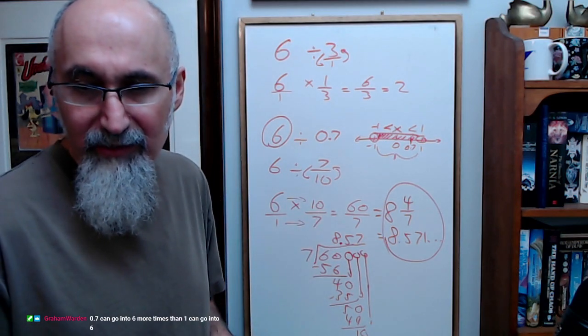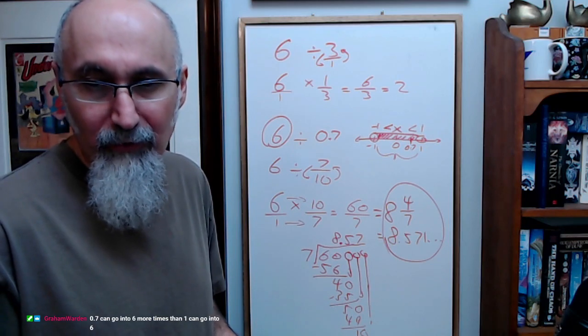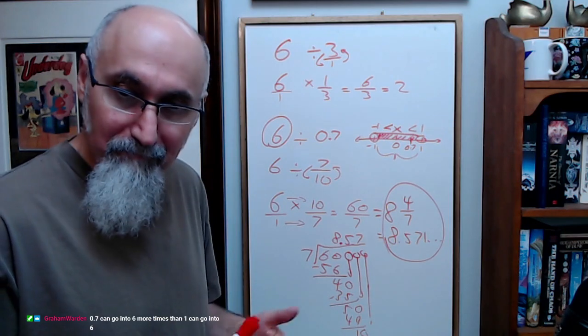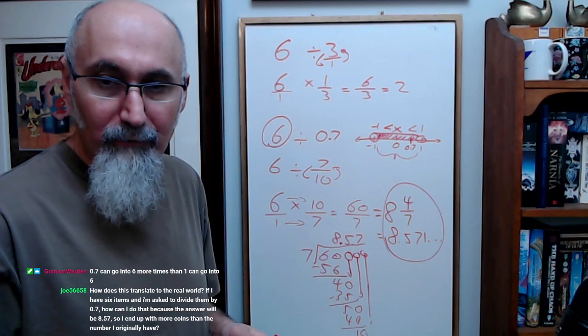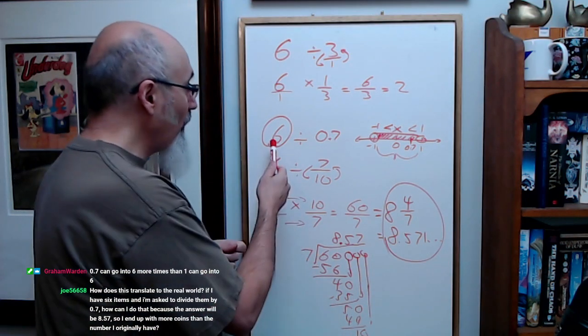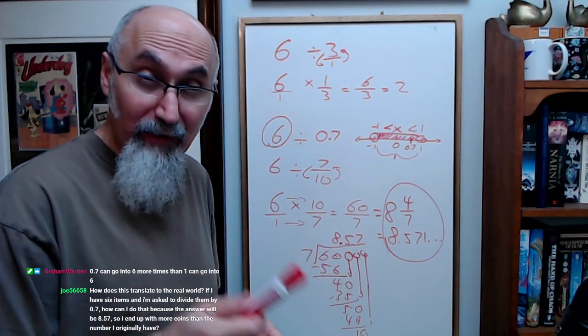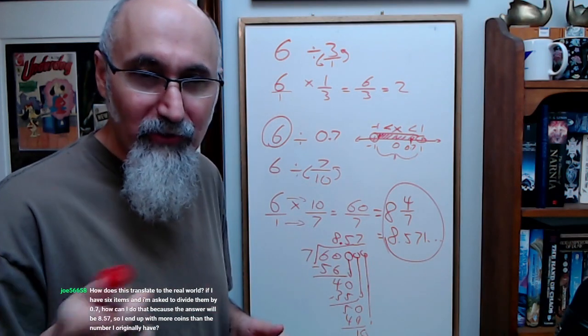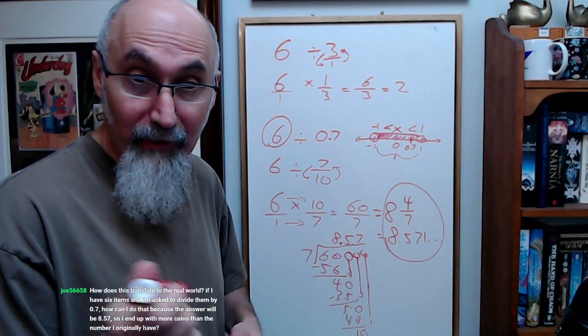0.7 can go into 6 more times than 1 can go into 6. Nice way of putting it, Graham. 0.7 can go into 6 more times than 1 can go into 6. That's a great way of saying it, Graham. I'm jacking that. I'm going to start using that. Thank you for that, by the way.